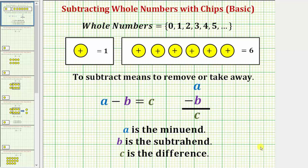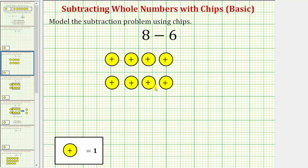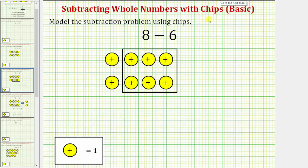Let's look at two examples. Let's model 8 minus 6 using chips. We begin by modeling 8 with 8 positive chips, and because we have 8 minus 6, we want to remove or take away 6 of these positive chips.